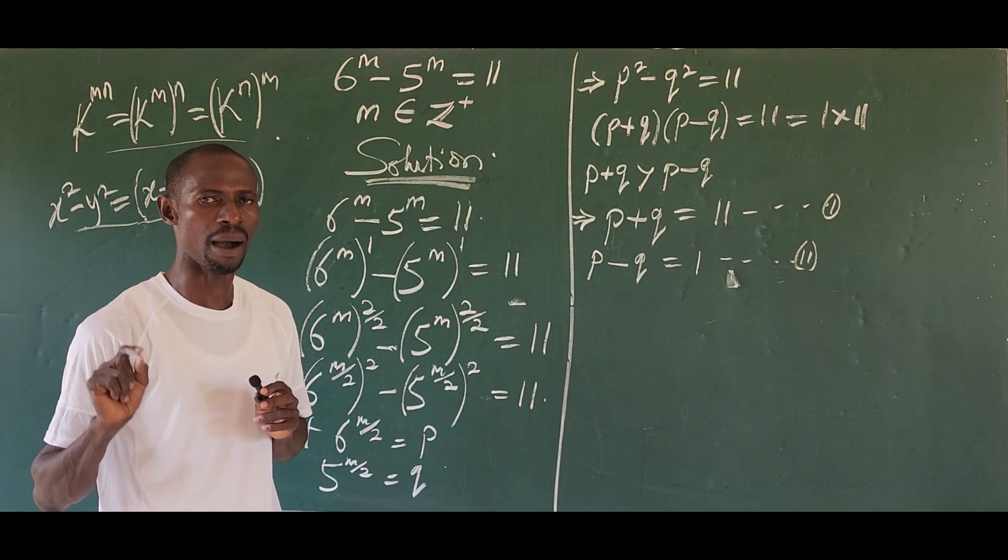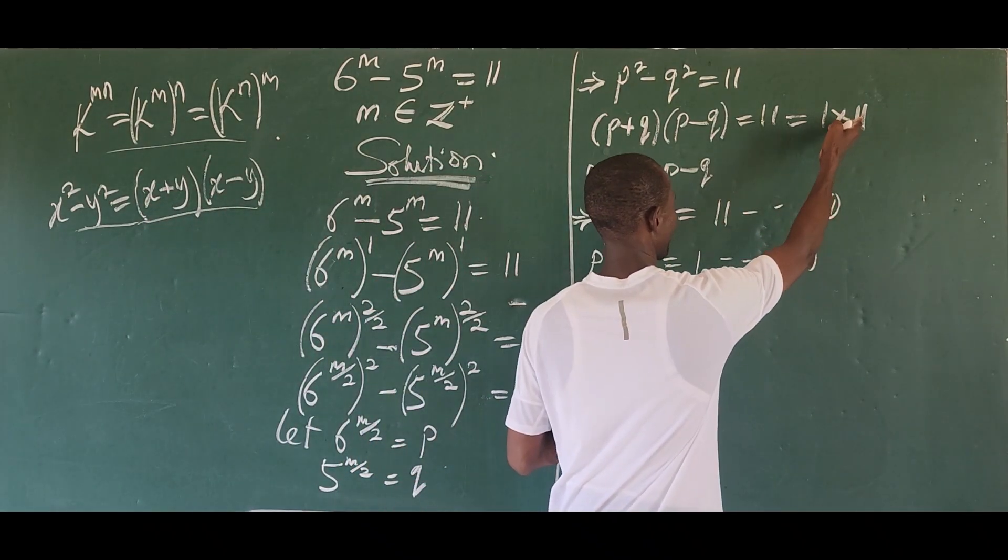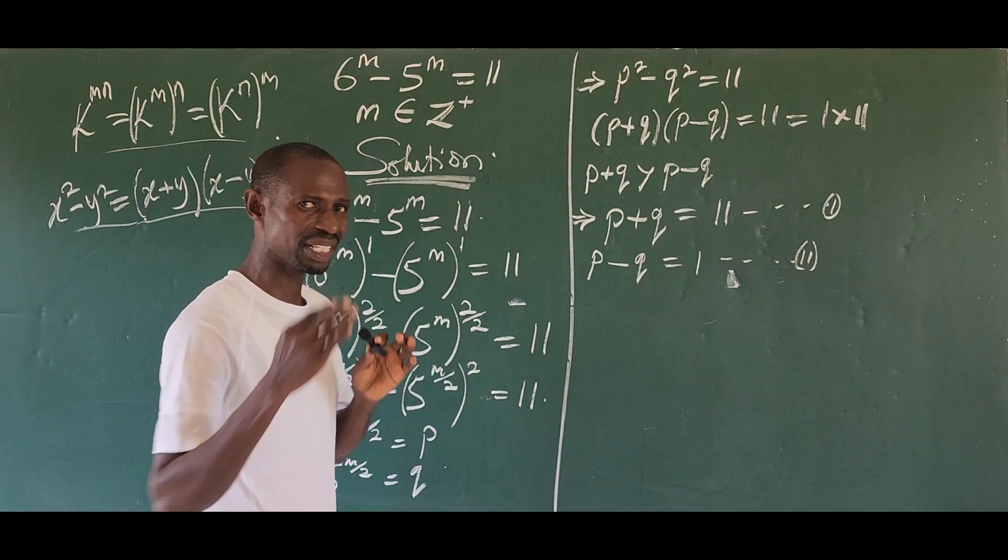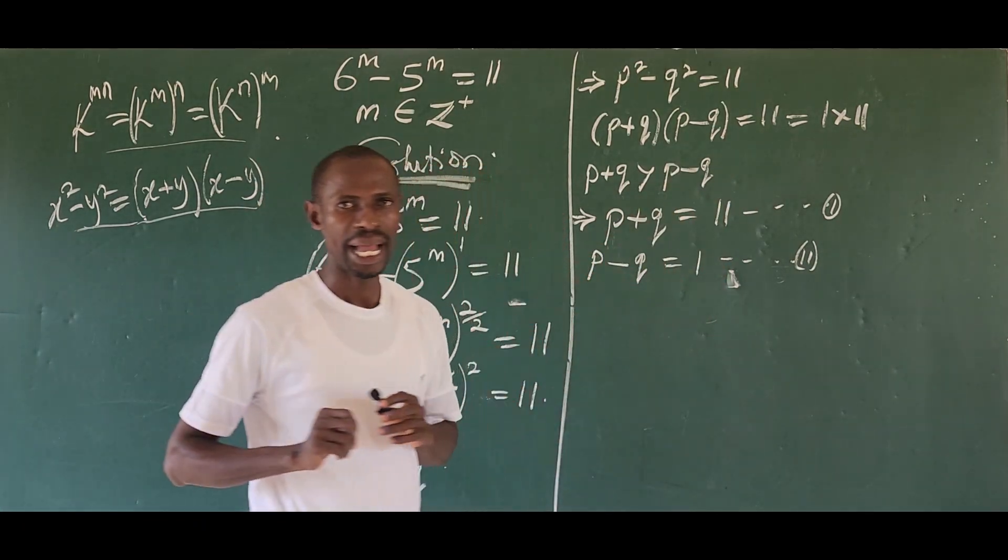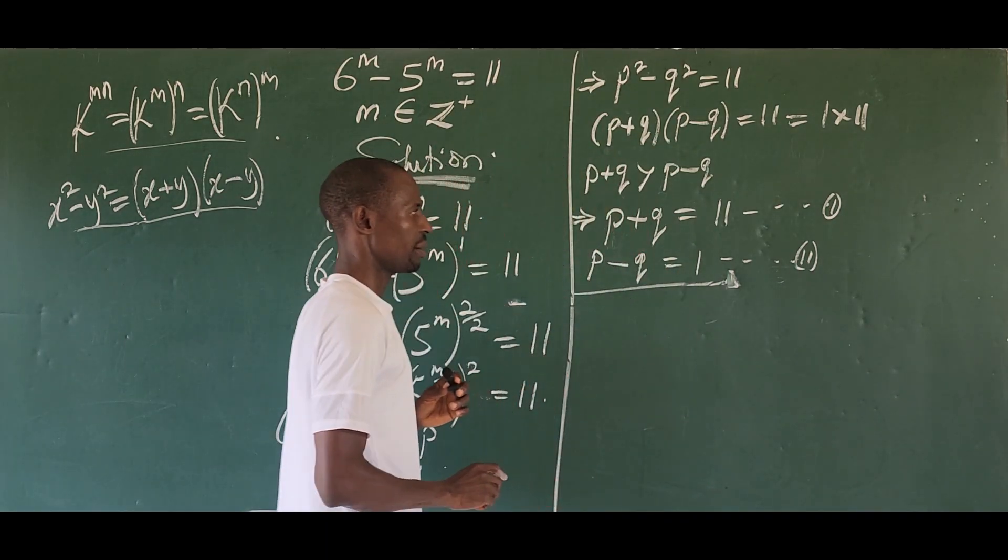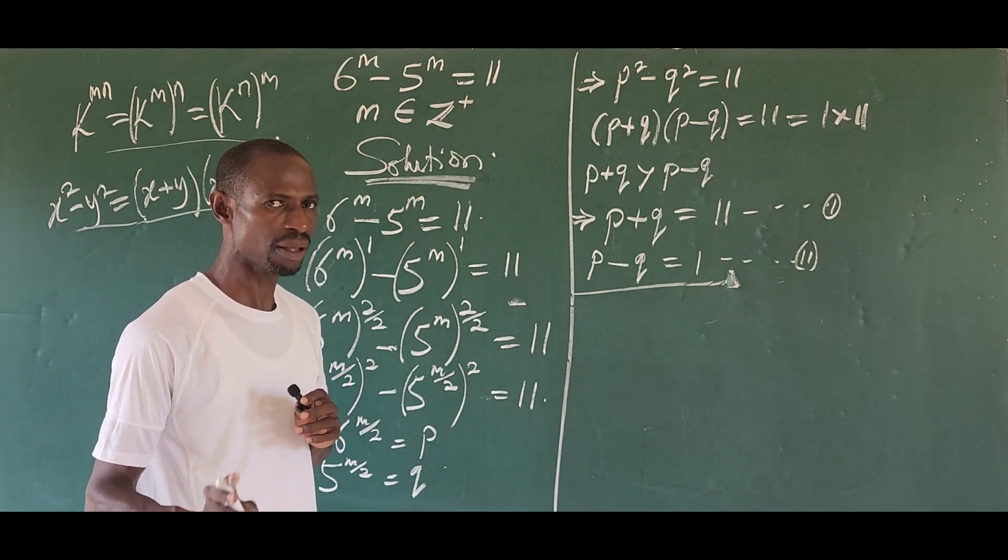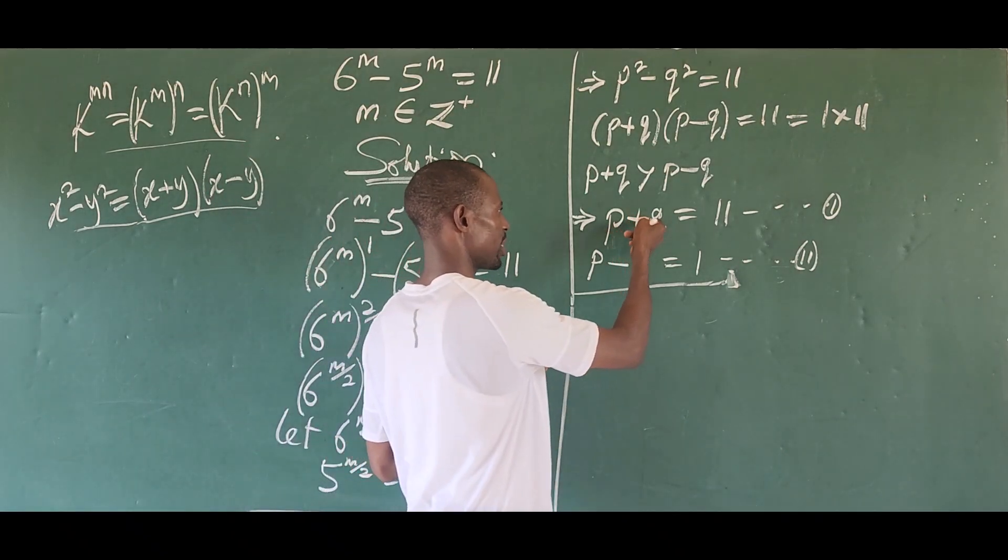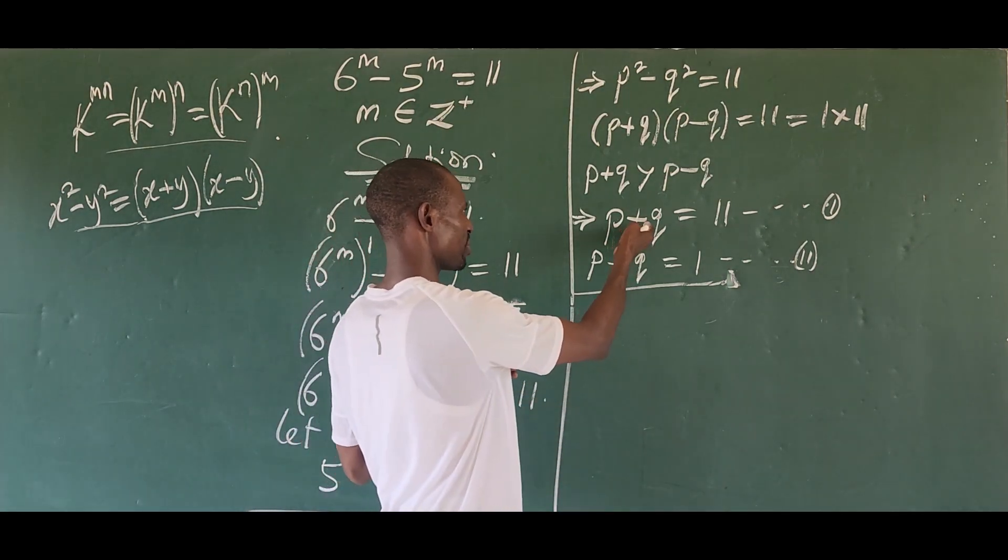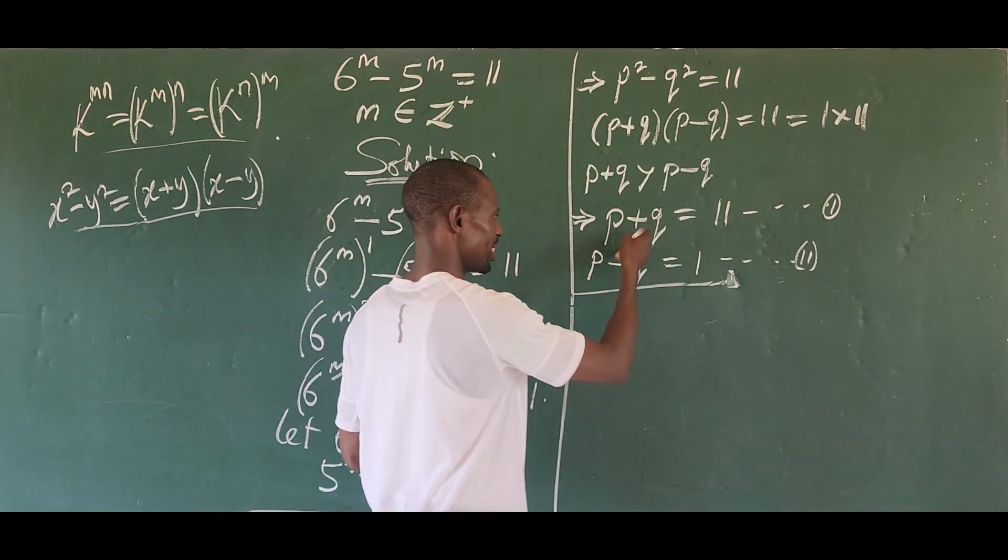Now, again, because we are looking for just the positive integer or the integer solution of this challenge here, that's why, if not, there are other fractions we can multiply together to give us 11. But because of what we are asked to look for, that's why we restricted ourselves to only 1 and 11. Now, from here, this is the simultaneous equation. So we can solve this by either subtracting equation 1 from equation 2 or adding equation 1 from equation 2. But there are laws in solving these. The law says that when you have these to be plus and you have here to be minus, then you add. But if you have here to be minus, minus, you subtract. If you have here to be plus, plus, you subtract. So since this is plus, minus, we want to add.